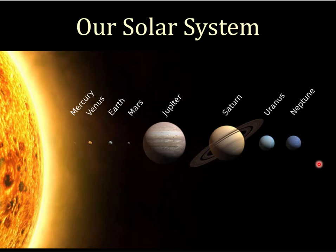A couple things jump out as you look at this. First, the Sun is huge — about 800,000 miles across. You could put the Earth at the center of the Sun, the Moon in its usual orbit 250,000 miles away, and the Moon would still be inside the Sun. It would only be a little over halfway to the surface of the Sun.